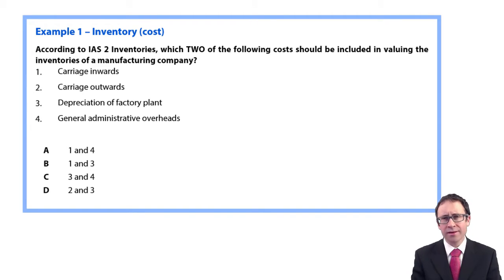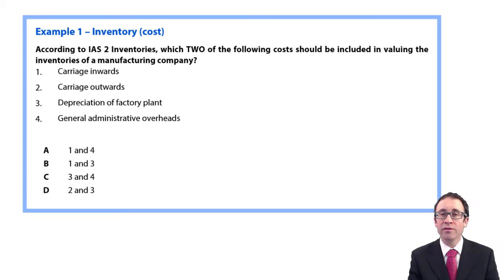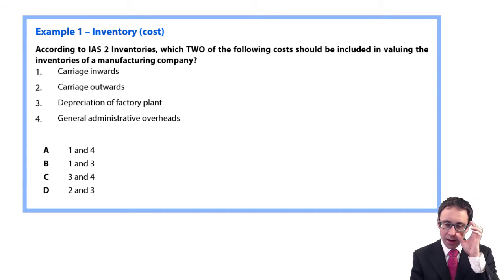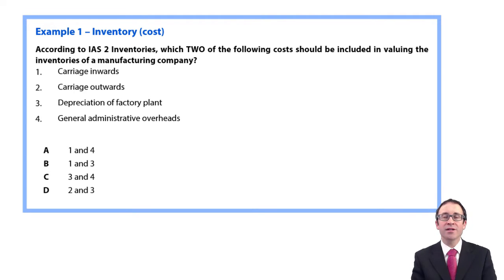That's the first one here — a type of multiple choice question. We've got the options A, B, C or D. And it says, according to IAS 2, which two of the following costs should be included in valuing the inventories of a manufacturing company?